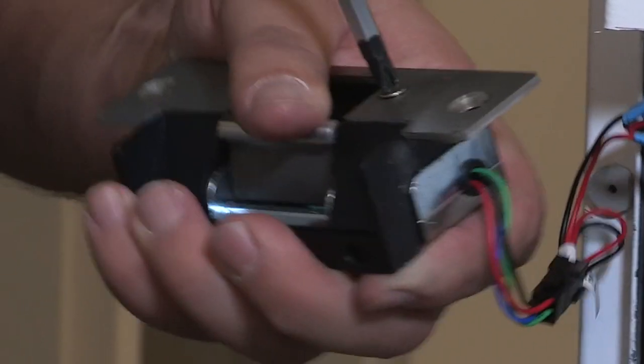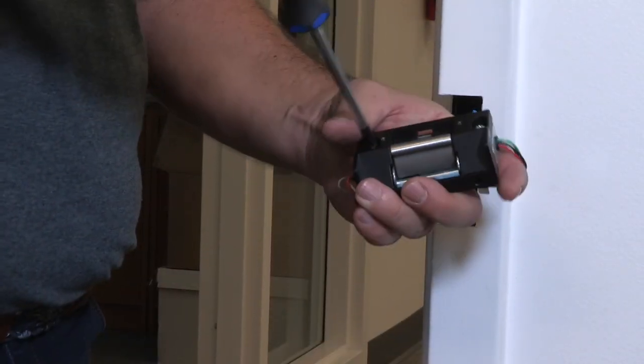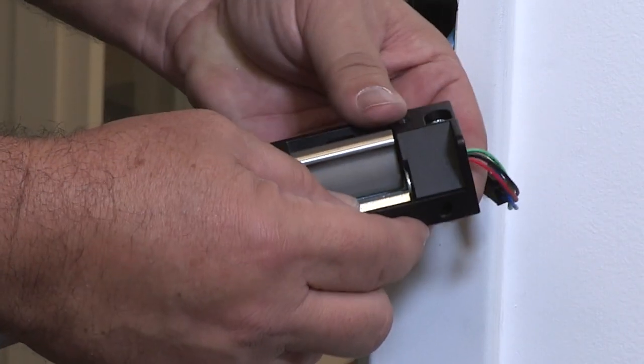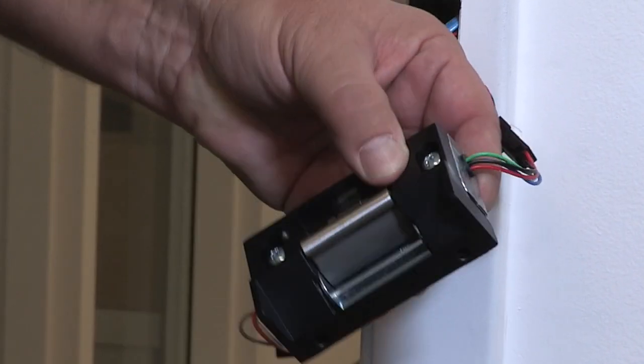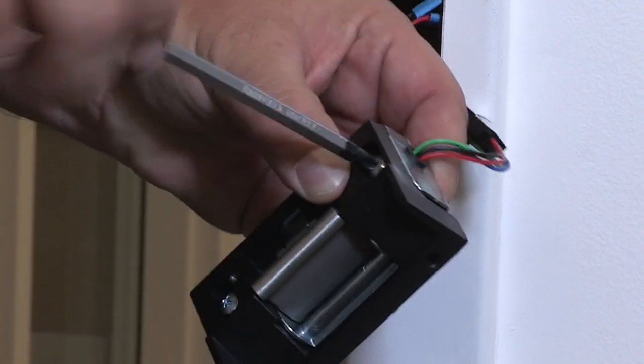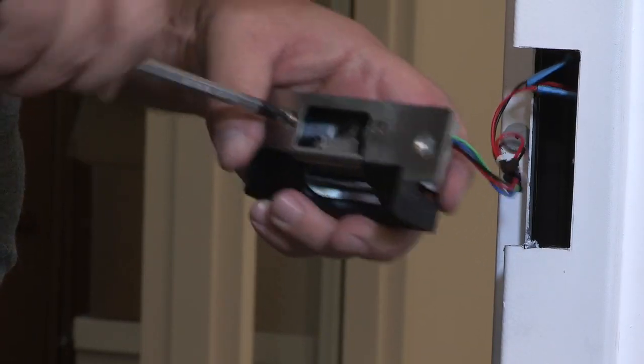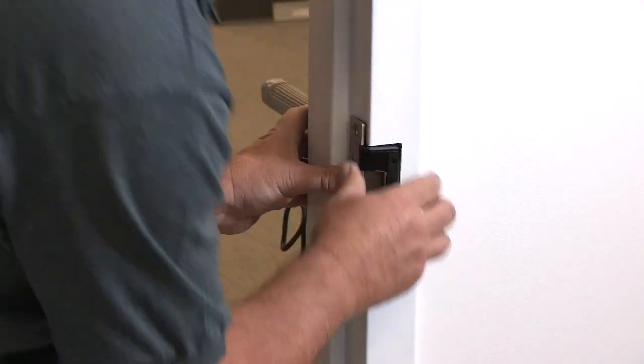Remove the strike, remove the faceplate, and loosen two screws to allow two parts of the strike to slide apart. Estimate the amount of movement you require and tighten the two set screws. Attach the faceplate and install the assembled strike in the frame.